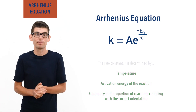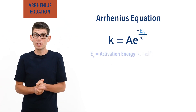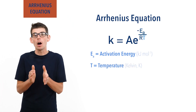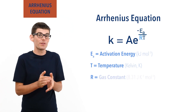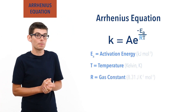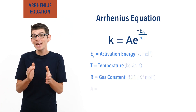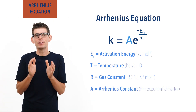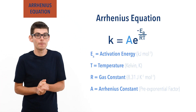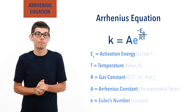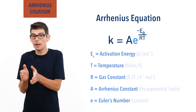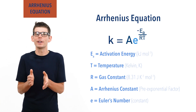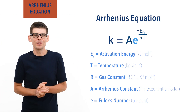And it does. Ea is activation energy, in kilojoules per mole. T is temperature, in Kelvin. R is the gas constant, a fixed value of 8.31 joules per Kelvin per mole. A is something called the Arrhenius constant, or pre-exponential factor, and can have different units for different reactions. And E is something called Euler's number — it's literally just a number, but as it has an infinite number of decimal places, we write it as E. More on that later in the video.